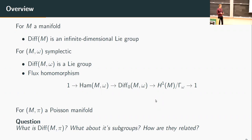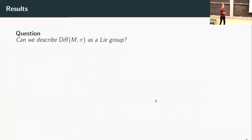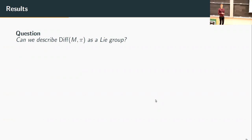Now if you look at the more general Poisson manifold, very little is known about what the group of Poisson diffeomorphisms actually is. That was the topic of my research. A more concrete question would be: just like in the previous cases, can we describe the group of Poisson diffeomorphisms as a Lie group? In general this question is too hard, so I started looking at specific cases.